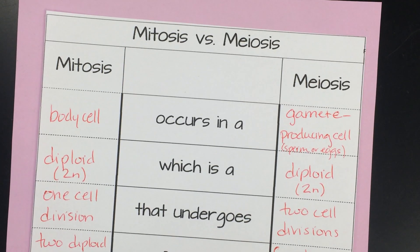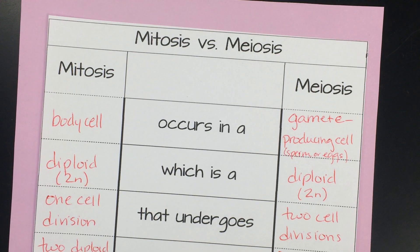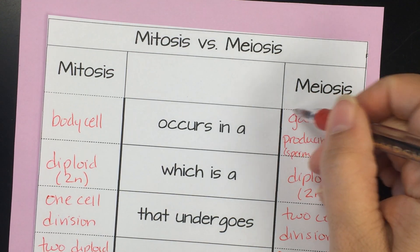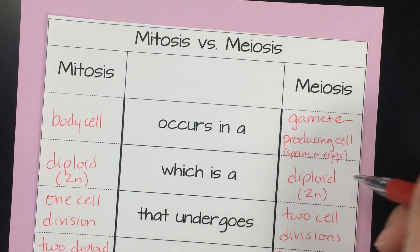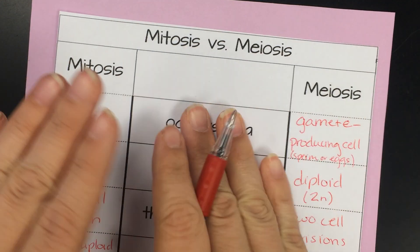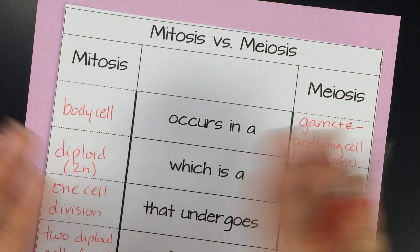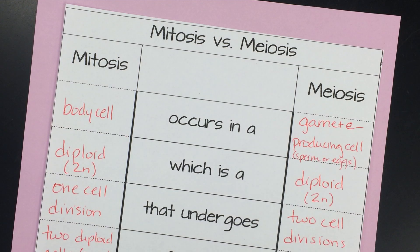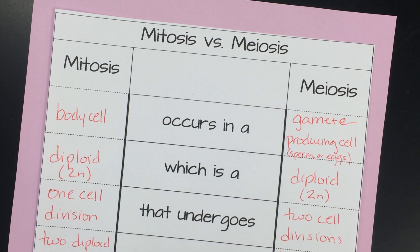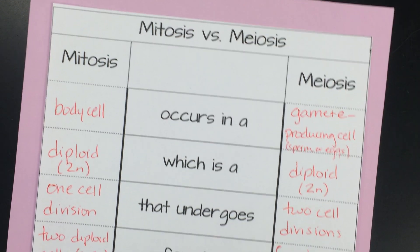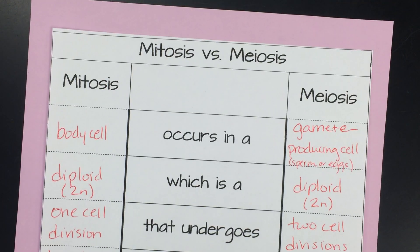You can leave it like this and glue it into your notebook. If you want, you can also make cuts on the dotted lines so it can flip over, which may help with studying. But that is your little diagram comparison chart for mitosis and meiosis.